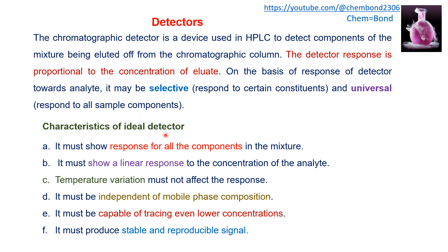There are some characteristics of an ideal HPLC detector. It must show a response for all components in a mixture. It must show a linear response to the concentration of the analyte. Temperature variation must not affect the response. It must be independent of the mobile phase composition, especially in gradient elution where the mobile phase composition is changing. It must be capable of detecting even lower concentrations, and it must produce a stable and reproducible signal.